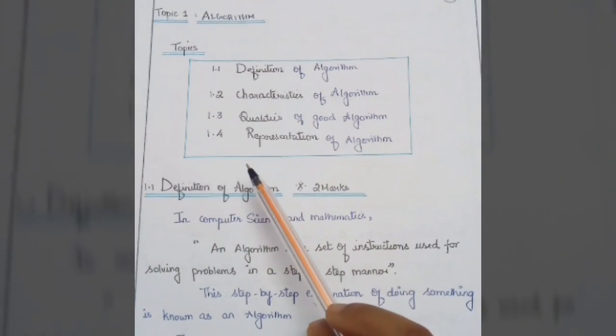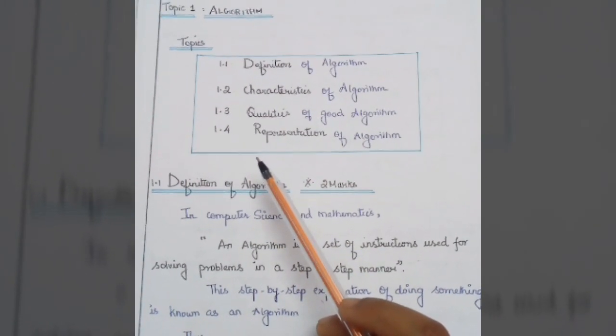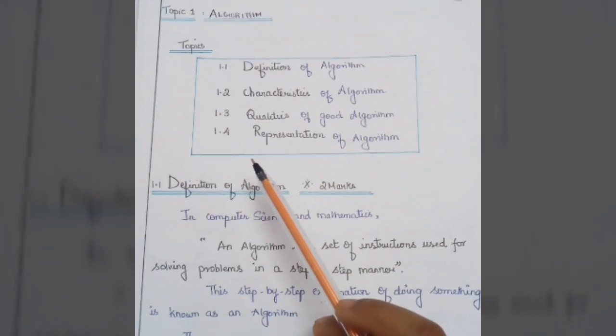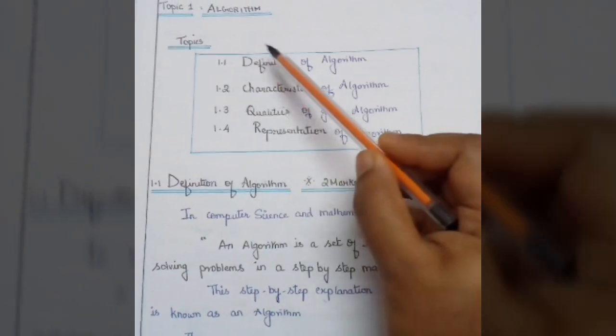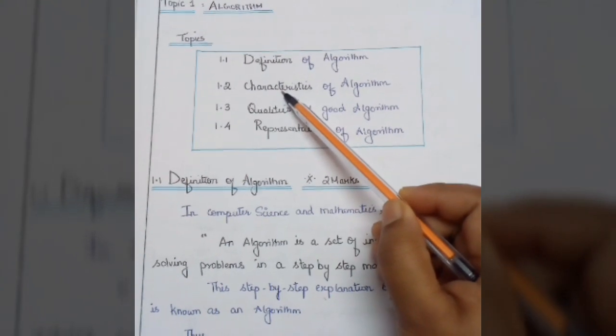Hi guys, welcome to my channel Learn CSE with RDMAM. According to the online SD syllabus, the first topic of the first unit is algorithm. The topic has these four subheadings: definition of an algorithm, characteristics of an algorithm, qualities of an algorithm, and presentation of an algorithm.